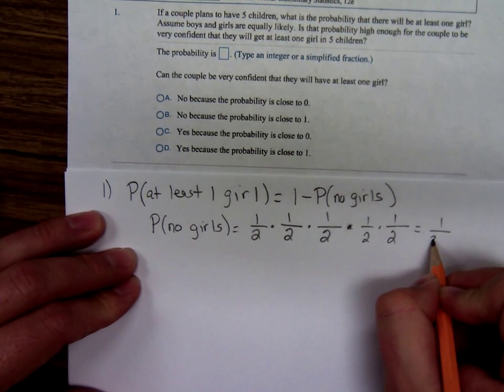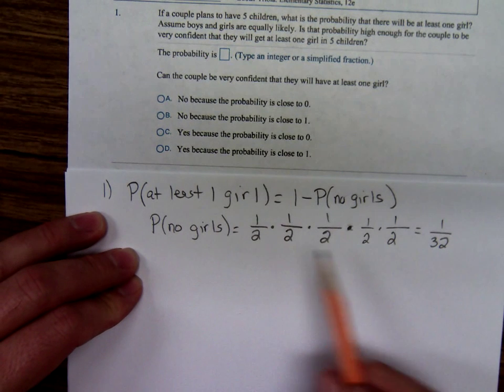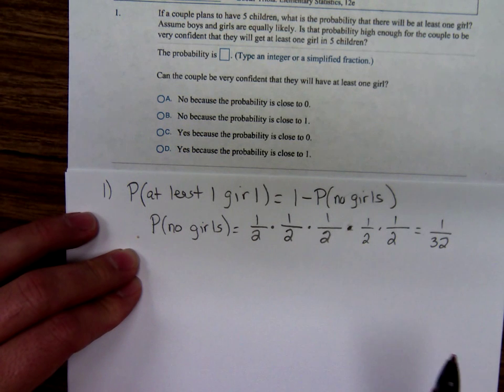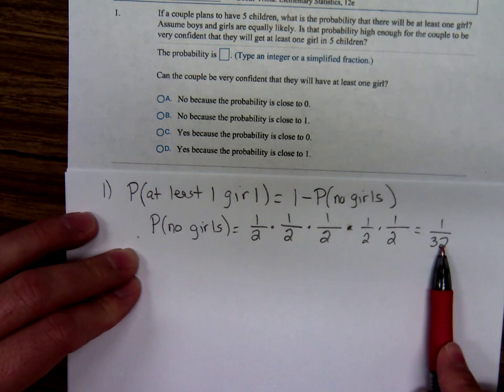So it would be one over 32. We could have written that as one half to the fifth power. So the probability of getting no girls is one over 32.